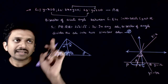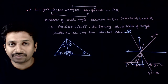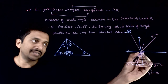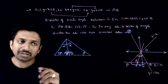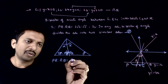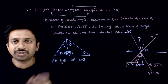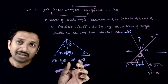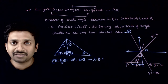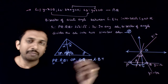Now let us check statement 1: PR : RQ = 2√2 : √5. By the angle bisector theorem, which we learned in 10th class, the bisector divides the opposite side in the ratio of the adjacent sides. So PR : RQ = OP : OQ, where O is the origin. To find this ratio, we just need to find the points P and Q.